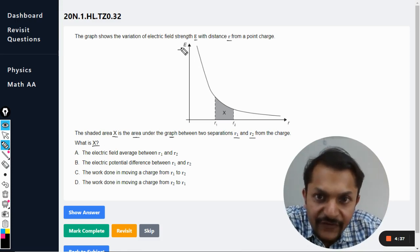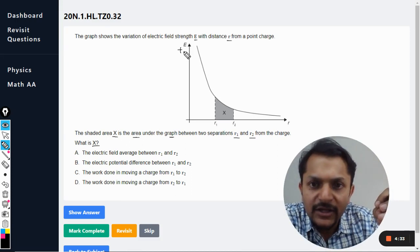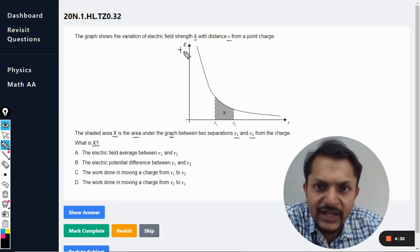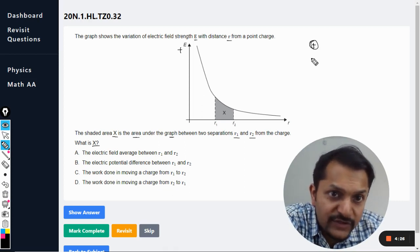The point to be noted here is that this graph is positive and E is the electric field strength. They are not talking about forces, they are talking about electric field strength. If it is positive, it only means that there is a positive source charge.